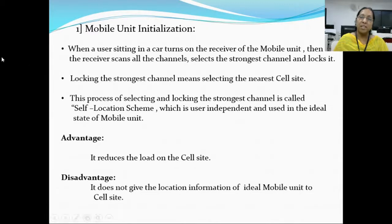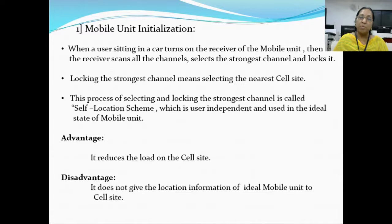Locking the strongest channel means selecting the nearest cell site — cell site is nothing but a tower. This process of selecting and locking the strongest channel is called the self-location scheme, which is user independent and used in the idle state of the mobile unit. This process runs automatically without participation of the user or the mobile unit, because both are idle.